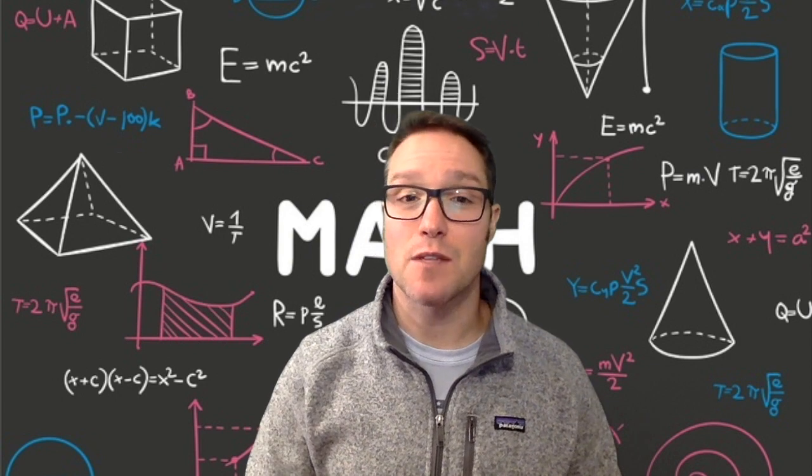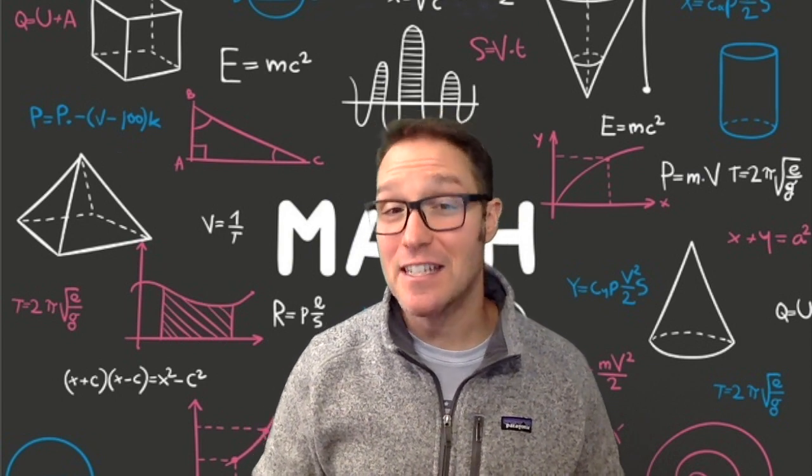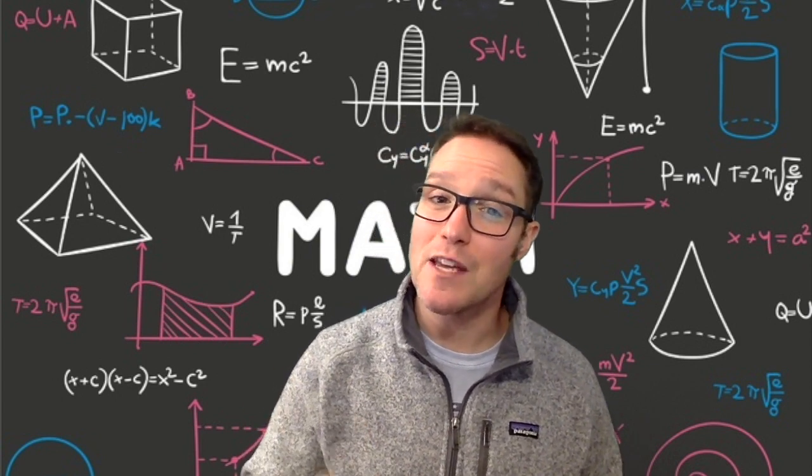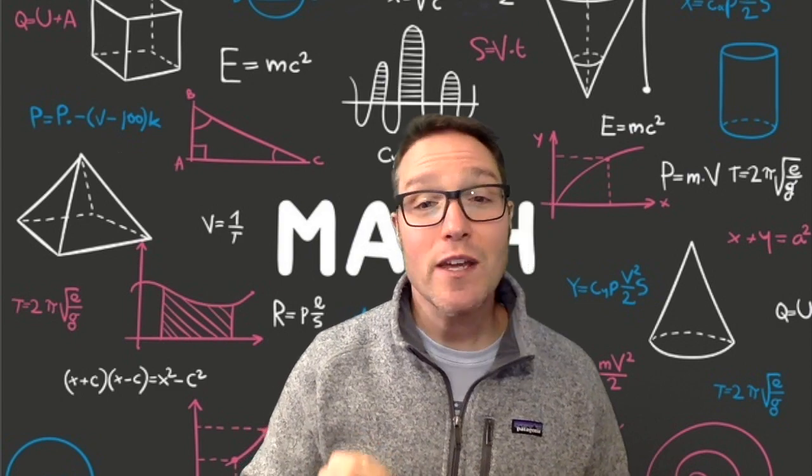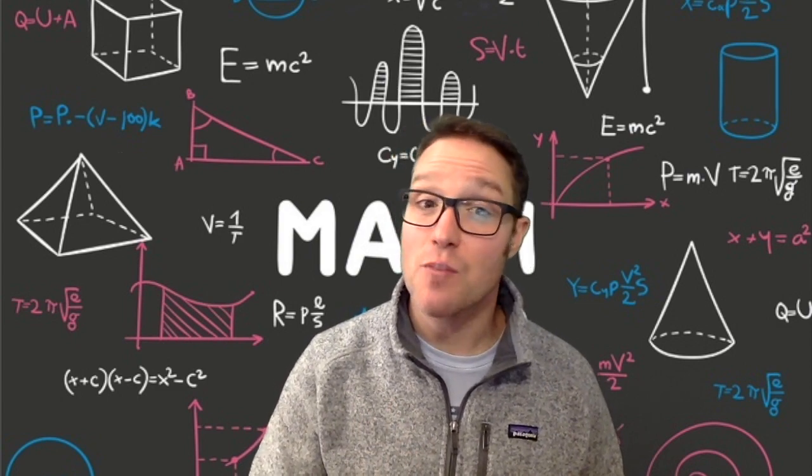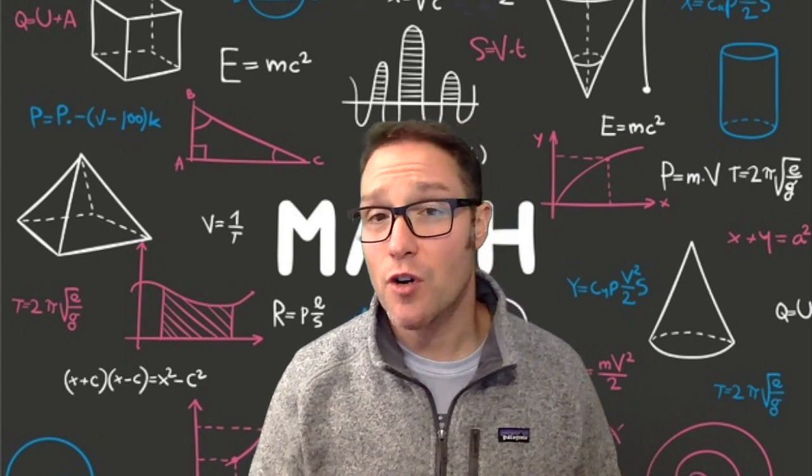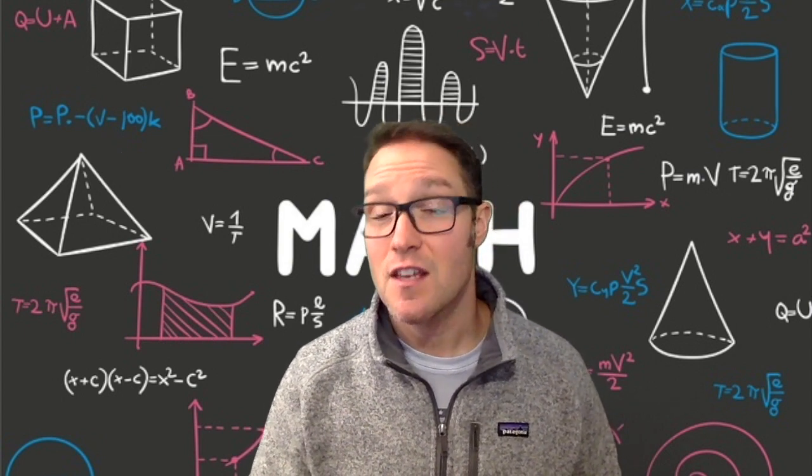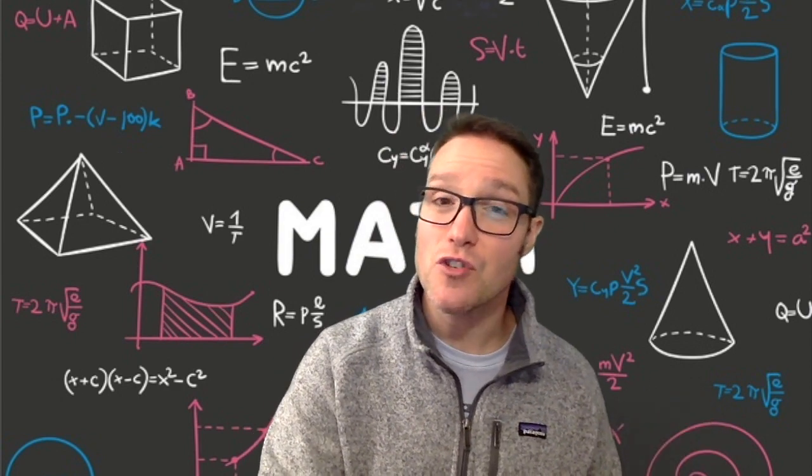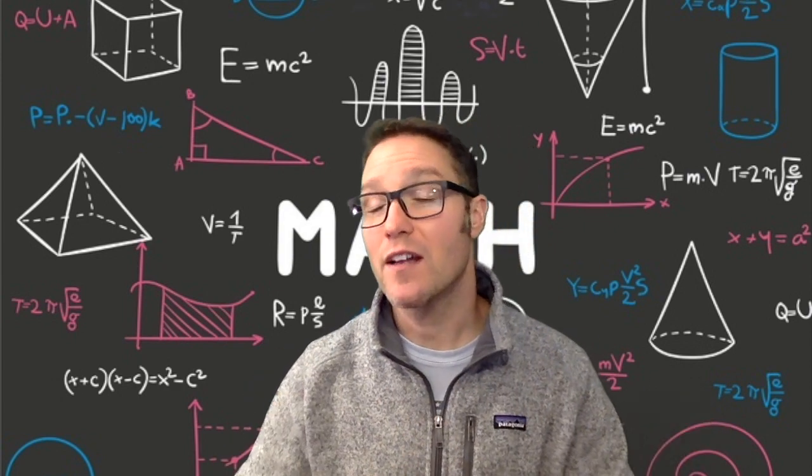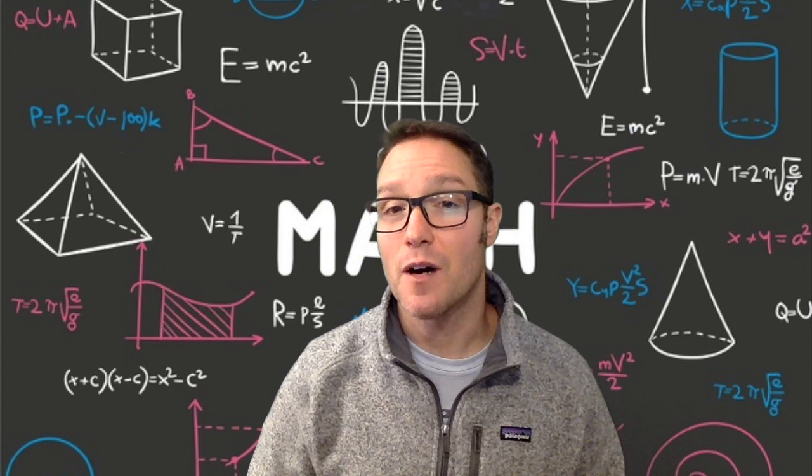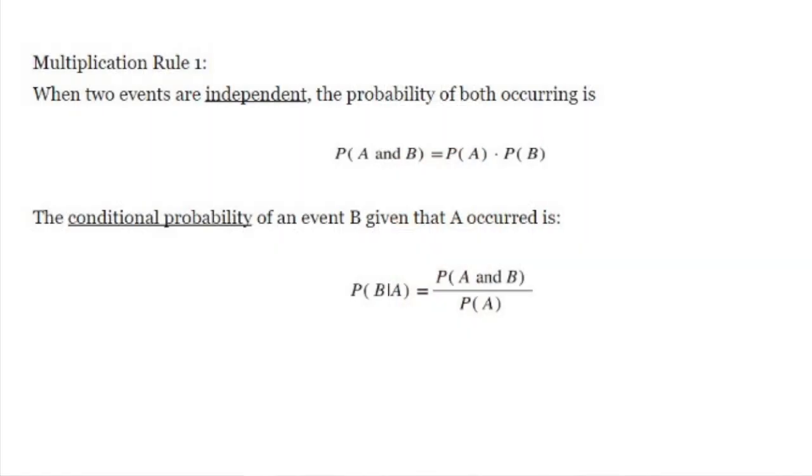The second major concept in probability is independence. Two events A and B are independent if knowing the fact that A occurred does not change the probability of B occurring. For example, two tosses of a coin are independent events since knowing the outcome of the first toss has no bearing on the probability of the outcome of the second toss. When two events are independent, the probability of both occurring is the probability of A and B equals the probability of A times the probability of B.